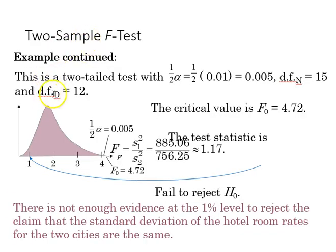We come here to identify our critical value. With the two-tailed test, one-half alpha, which we identified as 0.01, is going to give us 0.005 degrees of freedom in the numerator.